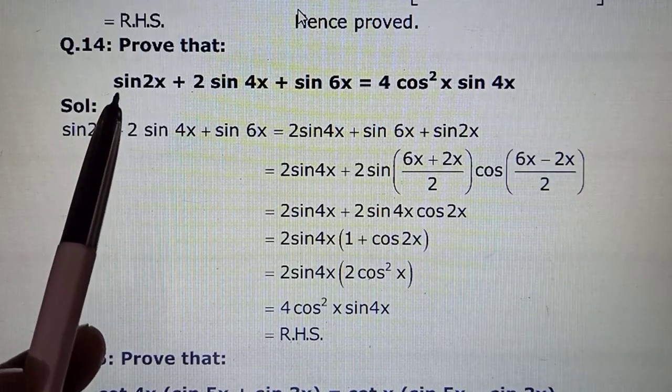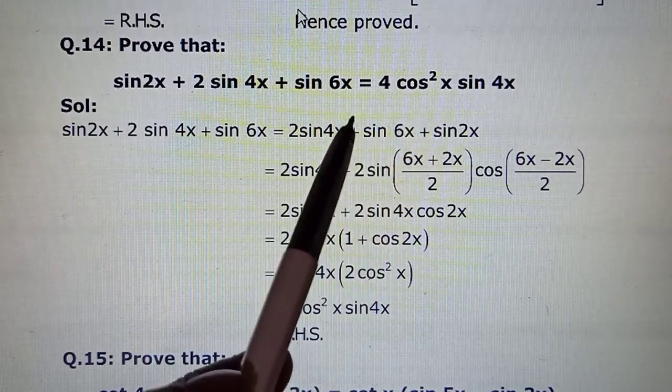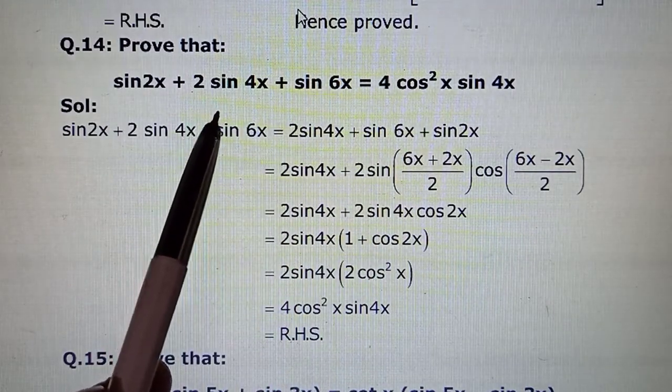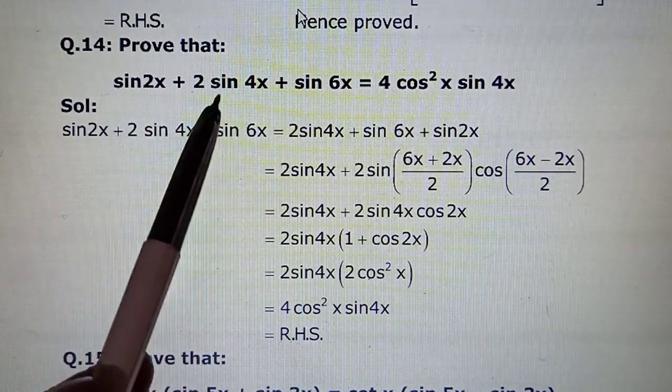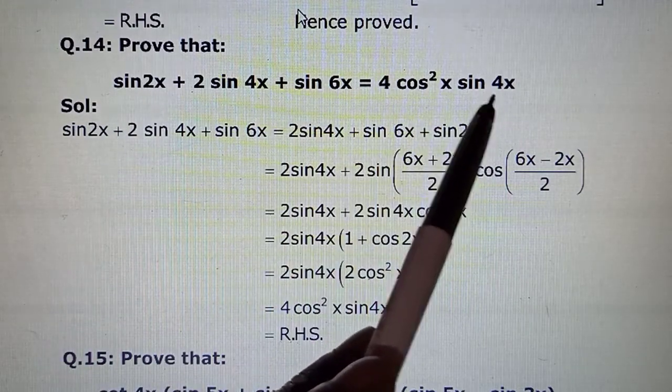Okay, yeh expression mere paas in hand hai and this is where I need to reach. Now what should be done. If it strikes me ki okay yeh formula laga sakte hai, toh thoda usse mentally work out kar lo. Like I showed you just now, 6 + 2, 8x/2 is becoming 4x. And sin 4x was required. Yehaan hai already. Yehaan se bhi aa sakta hai. Toh isko hume thoda rearrange karna padega.